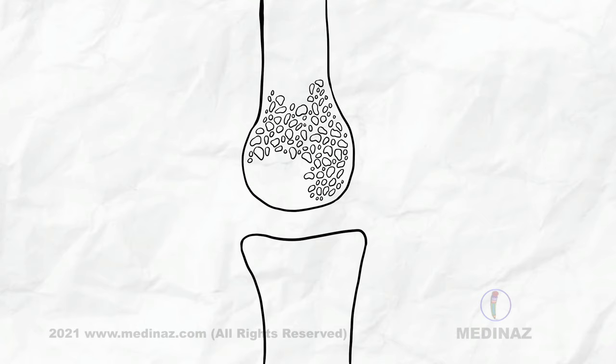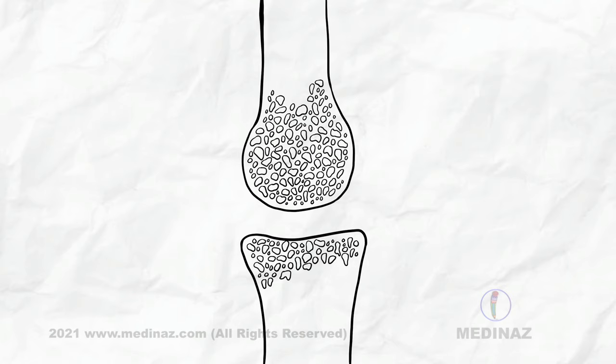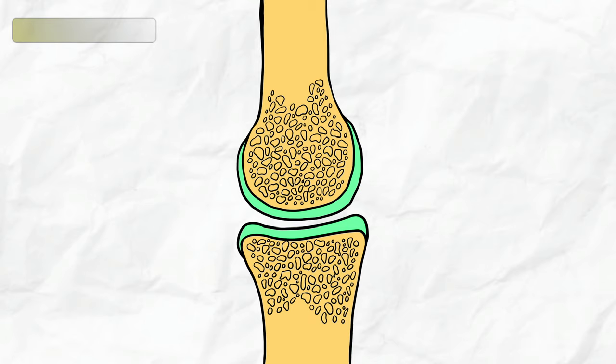Before going to the detailed discussion, let's start with the basic joint anatomy. Here I am drawing a knee joint. Knee joint is a synovial joint.